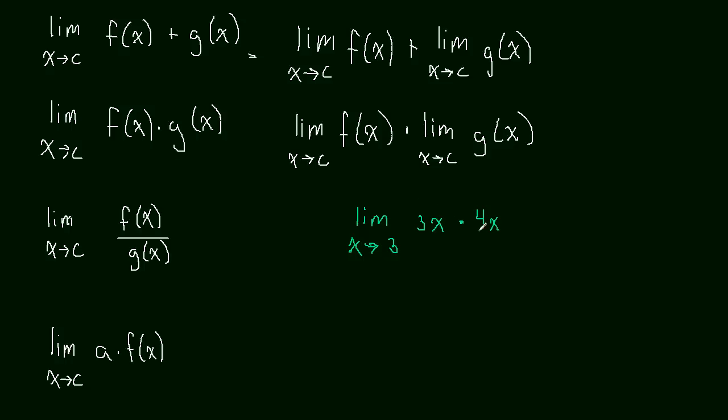Well, we could just simplify this, but let's do it as a product of the limit. So this will be the limit as X approaches 3 of 3X times the limit as X approaches 3 of 4X. And now we can plug our 3 in and we're going to get 9 times 12, which is equal to 108. Sorry. I don't know why I thought my arithmetic was off there.